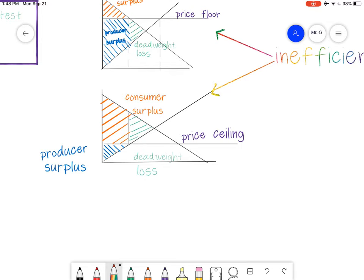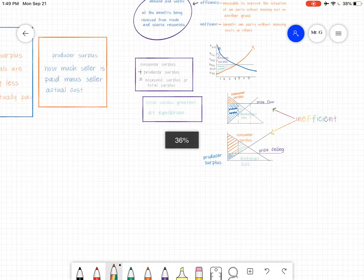Same with consumer surplus and producer surplus with a price ceiling. Producer surplus greatly shrinks down. Consumer surplus, it benefits them. But there's this deadweight loss. There's going to be an inefficiency in this case as well, which is equal to the deadweight loss. And if you actually have to calculate it out, you would just use your triangle formula, half times base times height. And that's how you actually calculate out the deadweight loss, how much that would be.